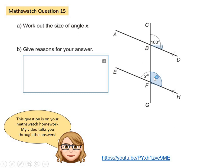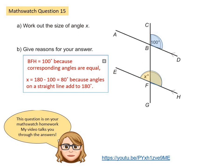So my reason would be that BFH, so if I start at B and go to F and continue to H, this angle here is 100 degrees because it's corresponding. Corresponding angles are equal. X and this angle are on a straight line so if I subtract 100 from 180 I get 80 degrees so X is 80 because angles on a straight line add to 180 degrees.